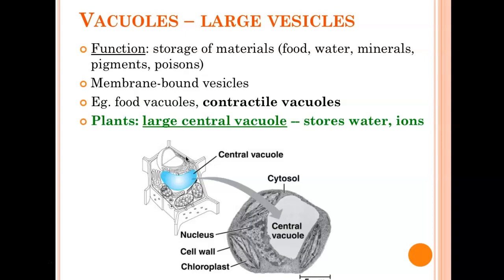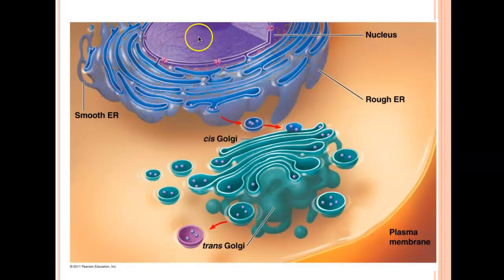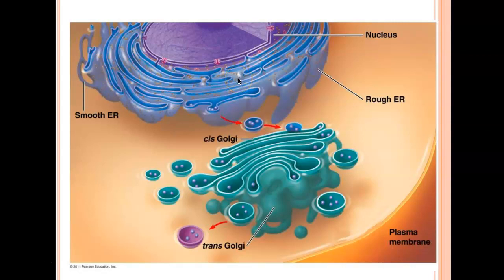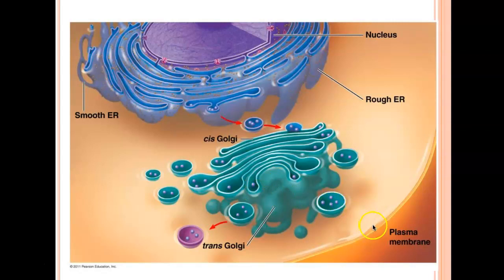What is the path of a protein from DNA to protein secretion? DNA gets transcribed into RNA in the nucleus. RNA leaves the nucleus and goes to a bound ribosome. The bound ribosome is where translation happens and a protein gets made. The protein then gets packaged into a vesicle, moves to the Golgi, fuses with the Golgi. It gets processed, then packaged in a vesicle again, moves to the plasma membrane, fuses with the plasma membrane. Then either it stays in the membrane or it leaves the cell completely.